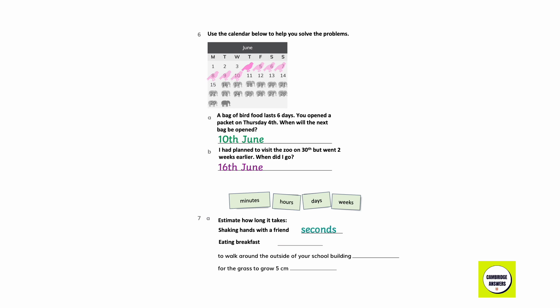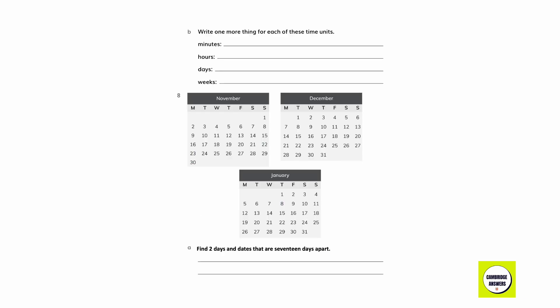Choose from the choices to estimate how long it takes: to shake hands with a friend — seconds; to eat your breakfast — minutes; to walk around the outside of the school building — minutes; for the grass to grow five centimeters — weeks. Write one more thing for each time unit: minutes — brushing your teeth; hours — going on an extended vacation; days — taking a road trip; weeks — completing a school project.